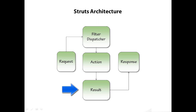That result can be a GSP page — in a lot of cases it is, but it doesn't have to be. It can basically be anything that ends up rendering some HTML. You can think of the result as a template as well, because GSP is really a template, or you could use some other templating technology that's supported by Struts. Once you have that result, it's going to be returned as a response to the user. You can see where you could draw the lines for an MVC architecture — the model, the view being the result, and the controller being that filter dispatcher and action combined.